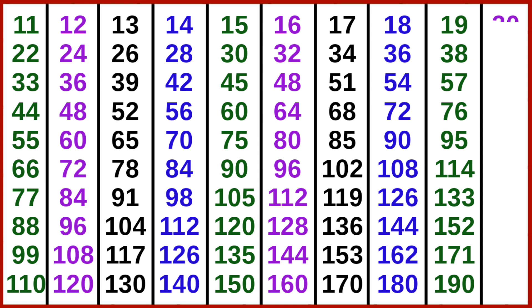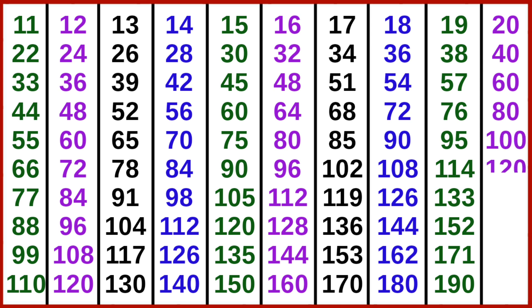20 ones are 20, 20 twos are 40, 20 threes are 60, 20 fours are 80, 20 fives are 100, 20 sixes are 120, 20 sevens are 140, 20 eights are 160, 20 nines are 180, 20 tens are 200.